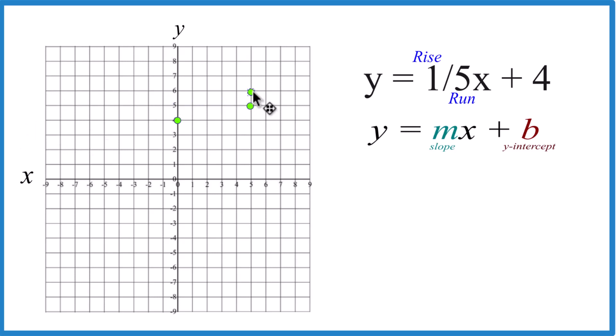From there, we could rise 1 and run 1, 2, 3, 4, 5, but we're off our graph paper.